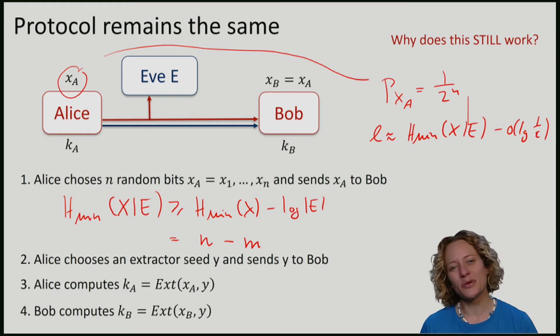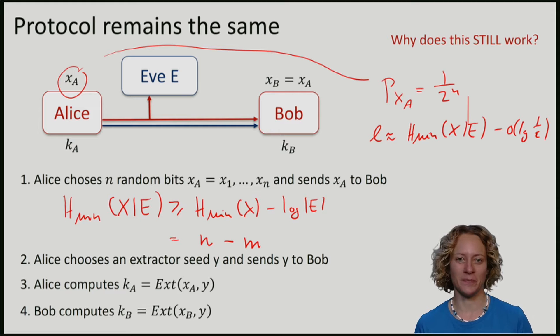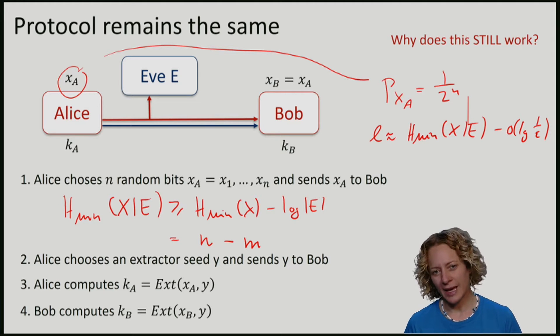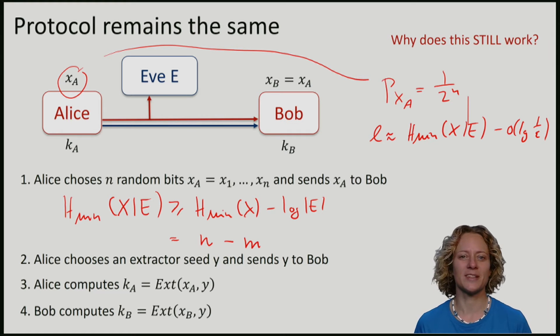You see now that in both of these scenarios, the property of the special channel or the property of Eve having a lousy memory give us a guarantee about the min entropy. This allowed us to turn a string x that we will also call the raw key into a proper key k using randomness extractors.